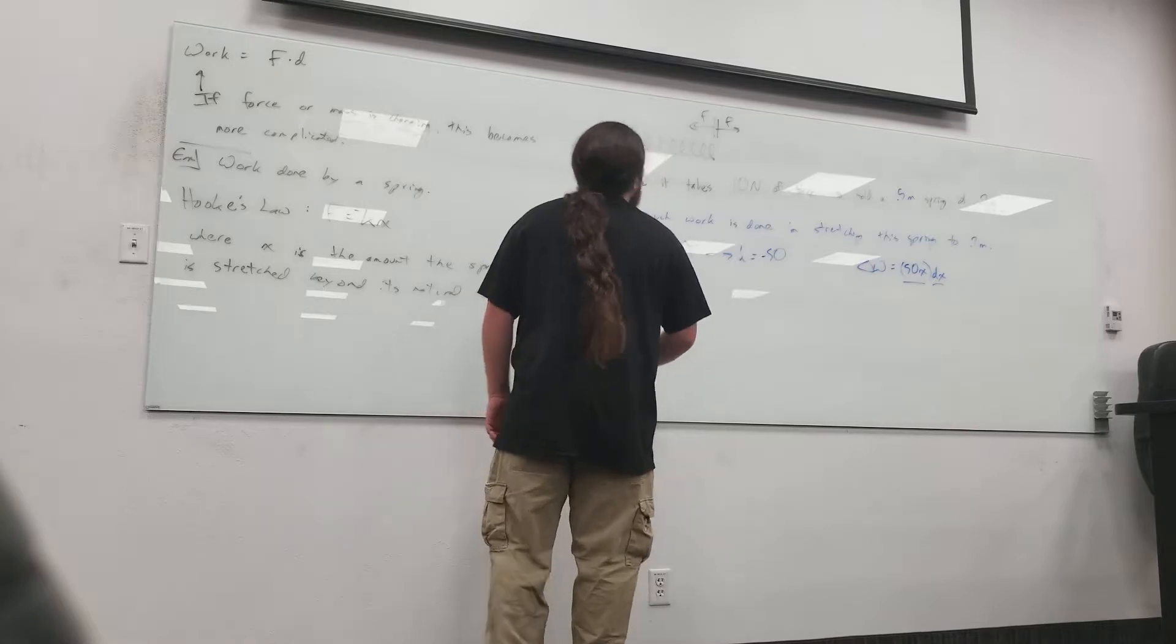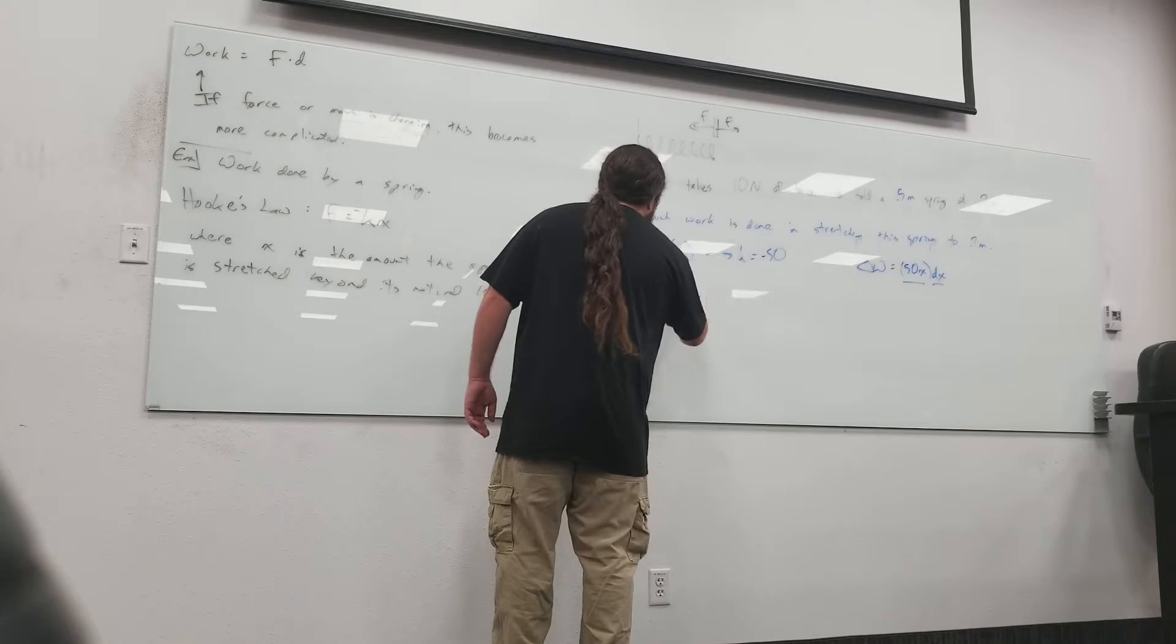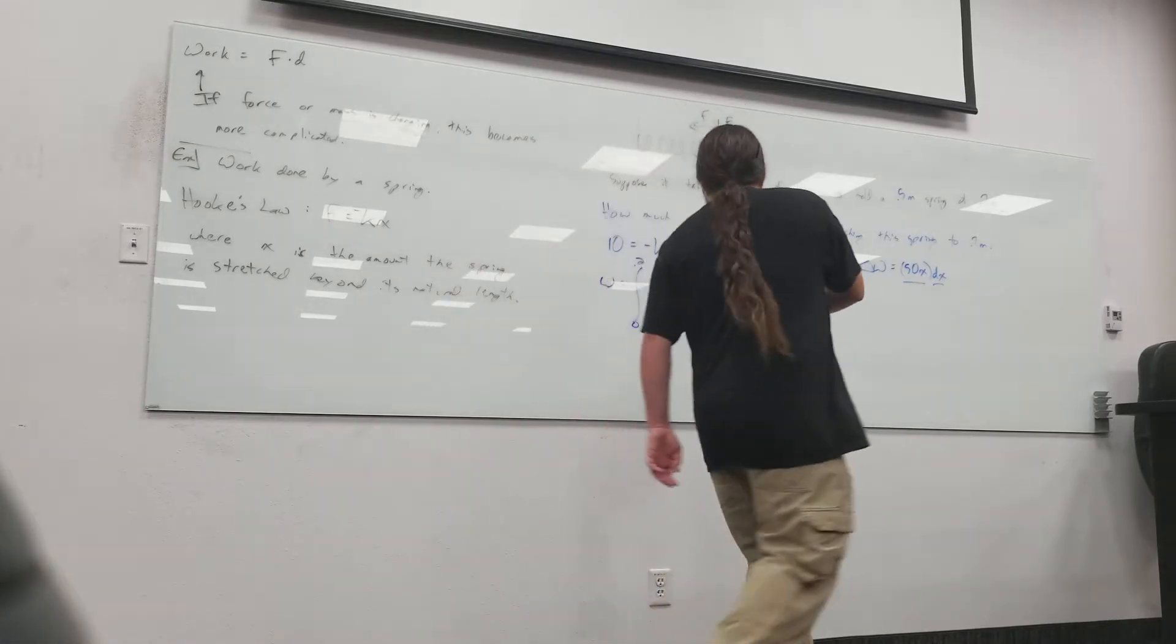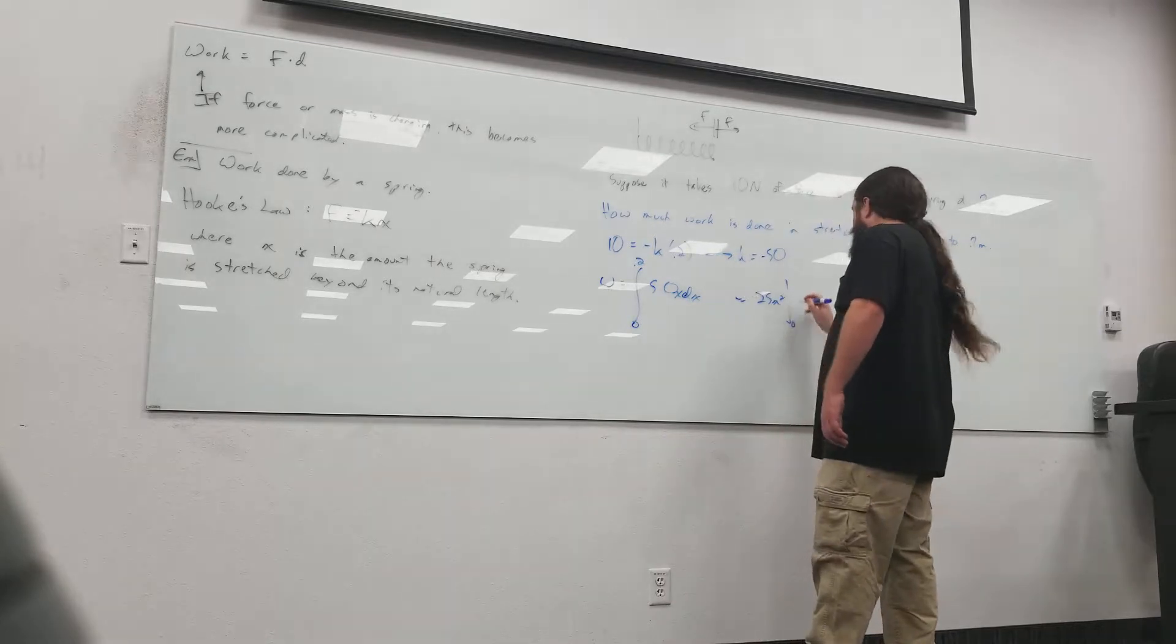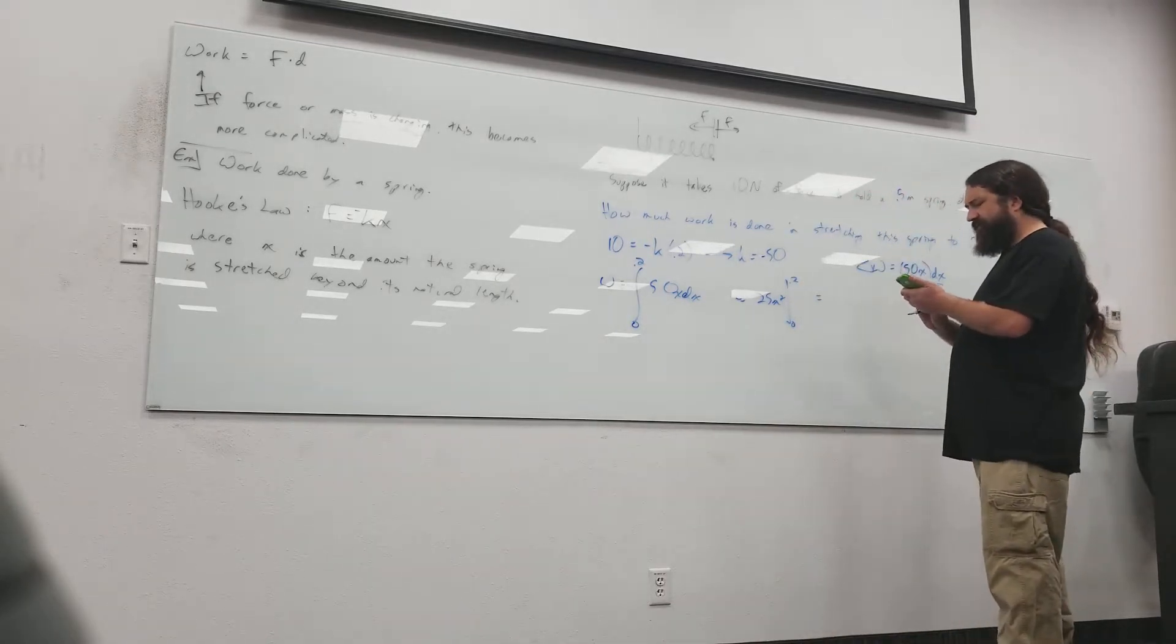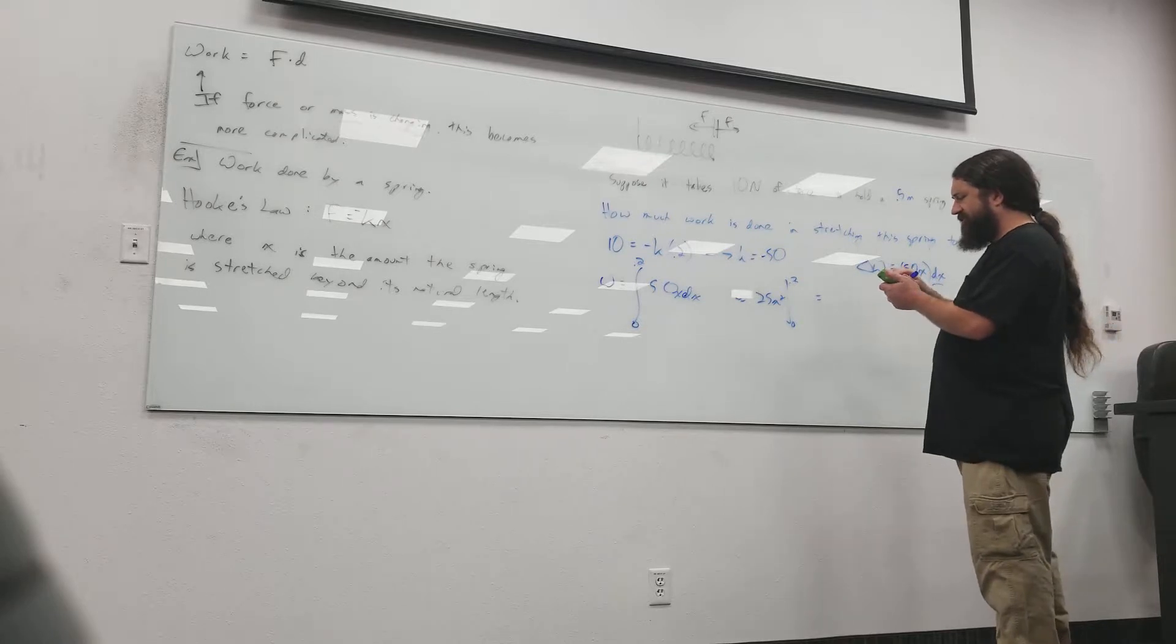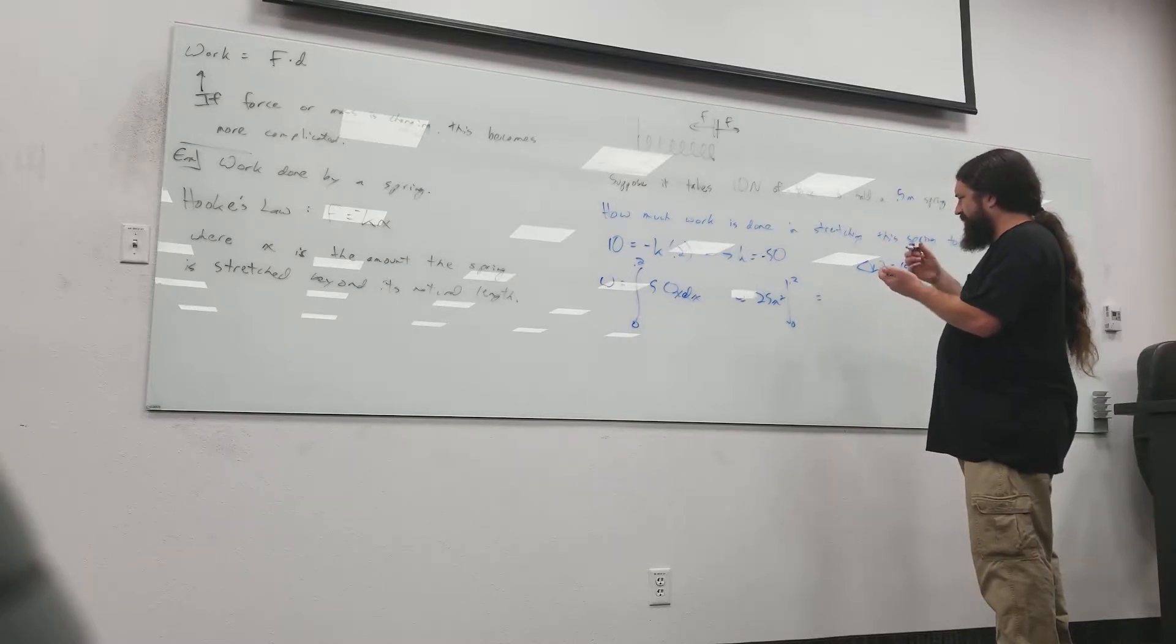So that's what I'm integrating. And I want to integrate that from what? Zero to 0.2. So, integral of 50x is 25x squared, evaluated at 0 and 0.2. Let's see what that is. I get 1.